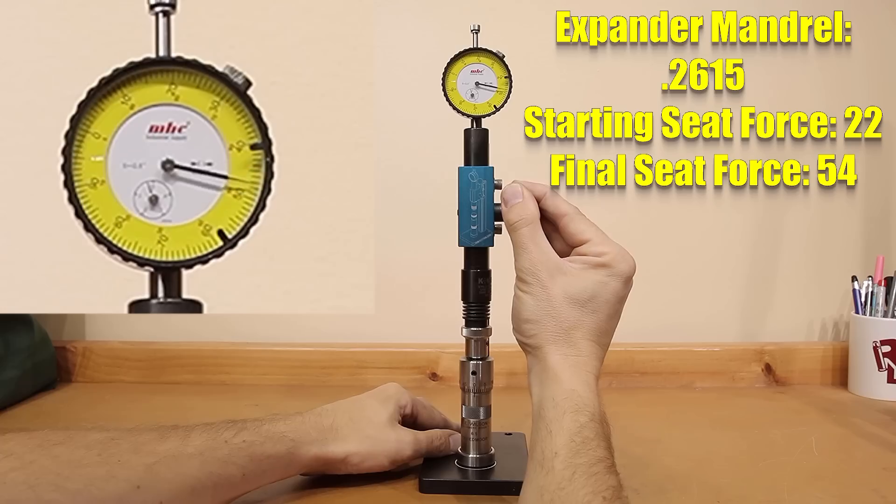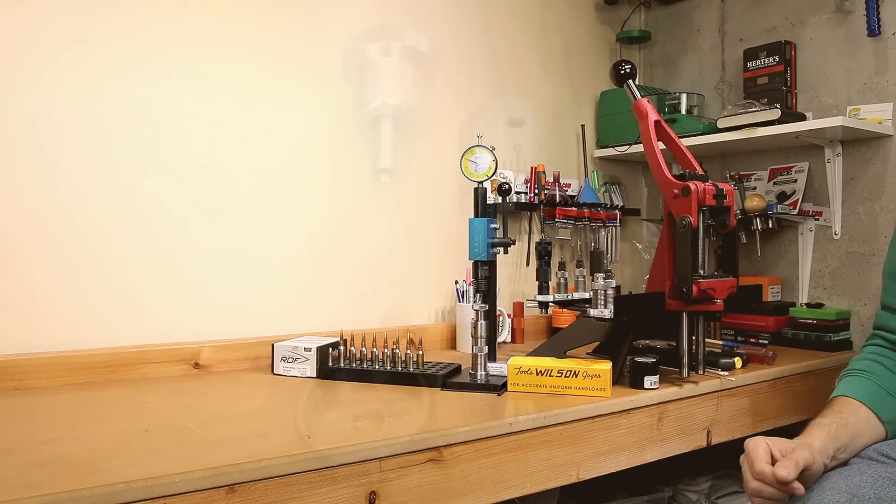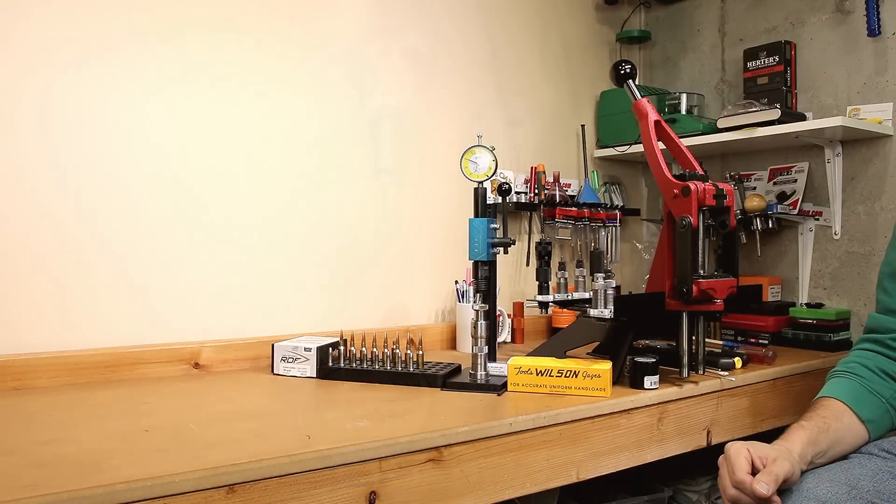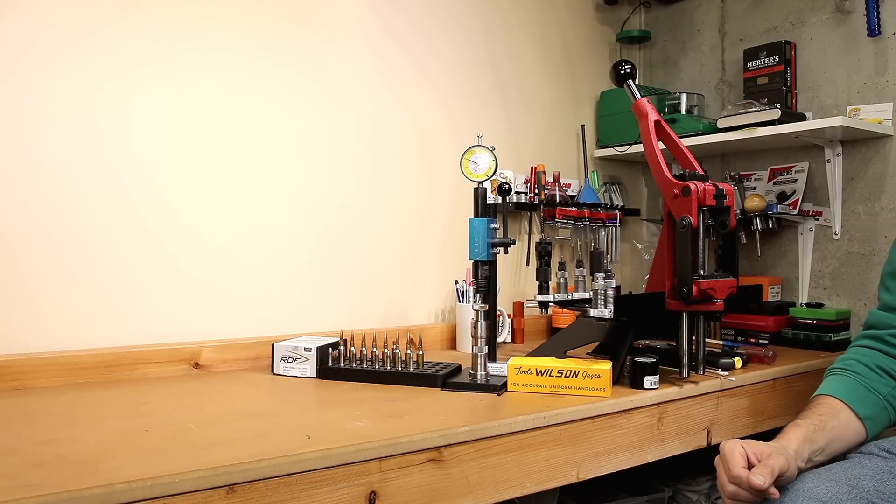In today's video, we're going to cover the K&M Arbor Press, as well as the Ellie Wilson Chamber type seating dies. We're also going to use these tools to better understand exactly how neck tension affects the seating force of a projectile.